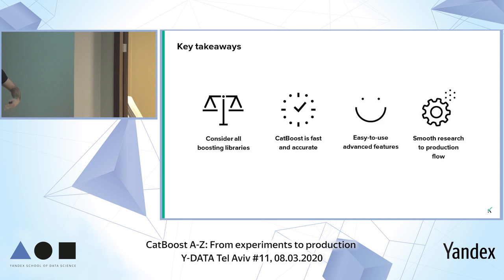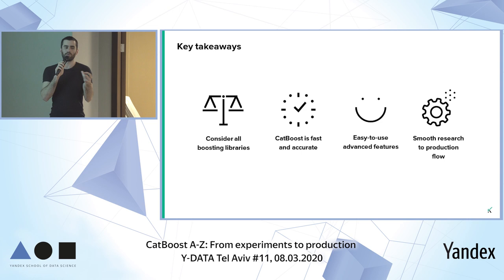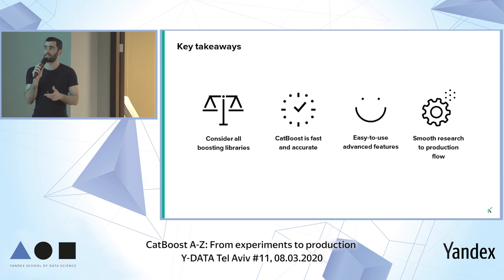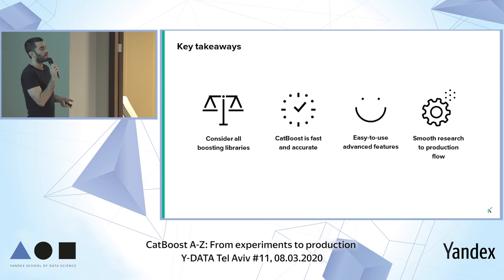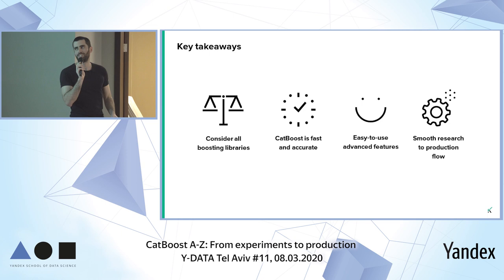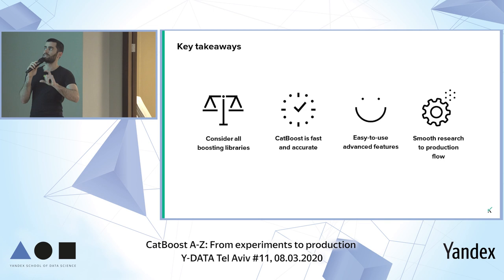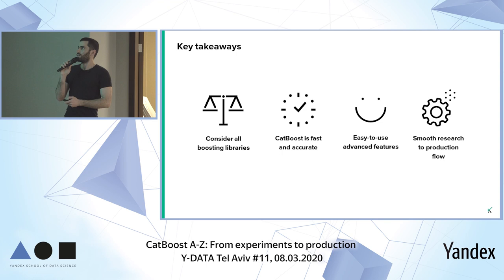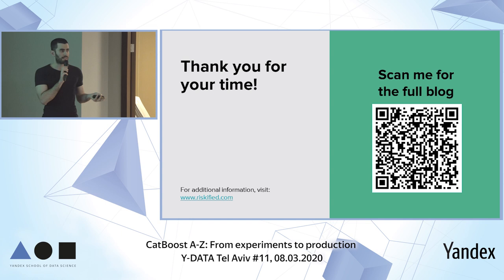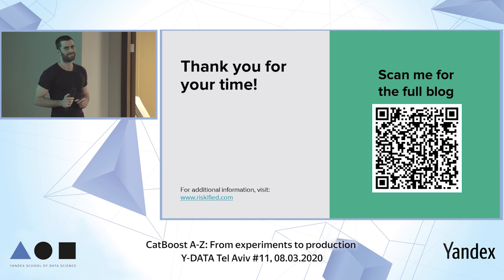Key takeaways: when starting a new machine learning problem and considering boosting, you should evaluate all the leading boosting libraries as each may have something unique that fits your needs. After our experiment, we found CatBoost fast and accurate, which is why we chose it for many of our daily machine learning tasks. It's easy to use, has advanced features that keep coming, and we found the transition from research to production pretty smooth. Here's a QR code to the blog I wrote, containing both the survey and experiment results.